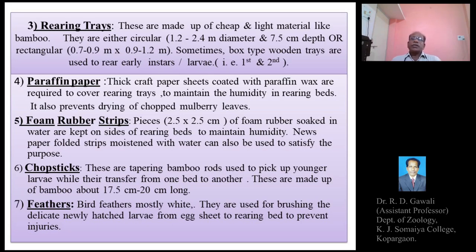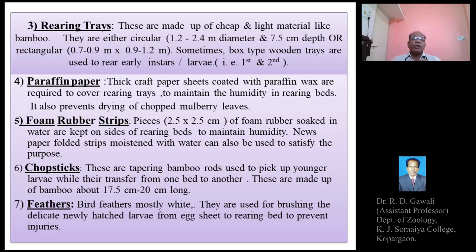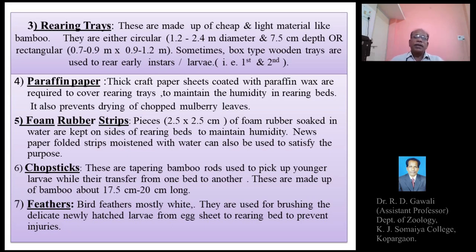Foam rubber strips are pieces of 2.5 by 2.5 centimeter foam rubber soaked in water and kept on the sides of the rearing beds to maintain humidity. Alternatively, folded newspaper strips moistened with water can also serve the same purpose of maintaining humidity in the rearing tray.